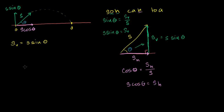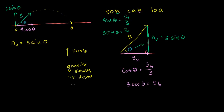So how long is it going to be in the air? If something is moving upwards at 10 meters per second, and gravity is decelerating it at 10 meters per second squared — so every second it slows down by 10 meters per second — how long will it take for that object to reach zero velocity? It'll take exactly 1 second to go from 10 meters per second to 0 meters per second.